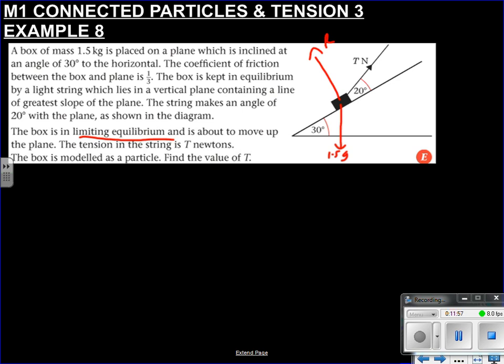Not F is less than or equal to mu R. Because remember, friction can vary. It will go to the amount that's required until it's at its maximum. And then the thing starts accelerating or moving. Tension in this string is T. So it's about to move up the plane, which means friction must be against its movement, mustn't it? So friction must be a third R.